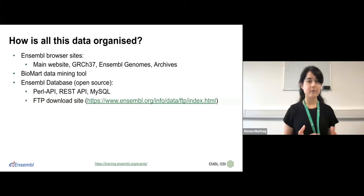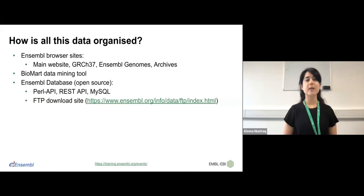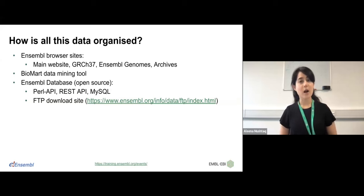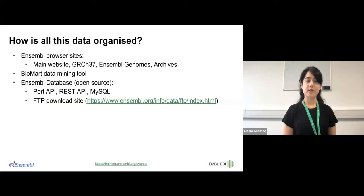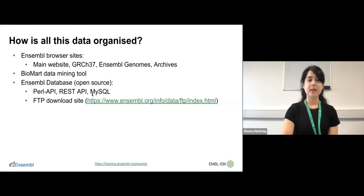All of this data is organized in our browser sites: the main website, GRCh37.ensembl.org for the previous human genome assembly, Ensembl Genomes (our sister site for non-vertebrates), and our archives (previous versions of Ensembl frozen in time for up to five years). You can also export Ensembl data using BioMart, and we have open-source access to Ensembl databases via Perl API, REST API, and MySQL. You can find the link to our FTP site on this slide.